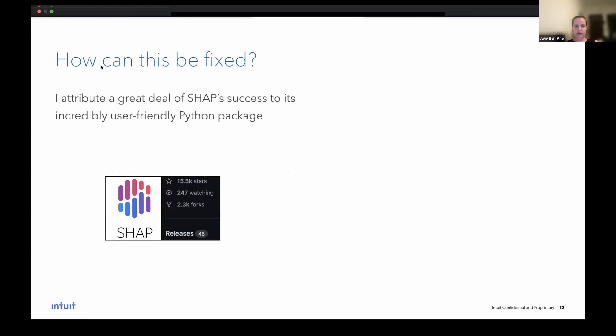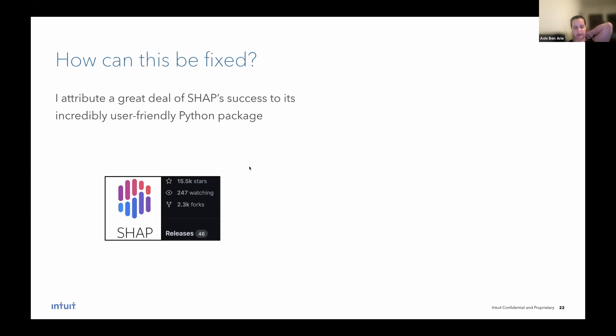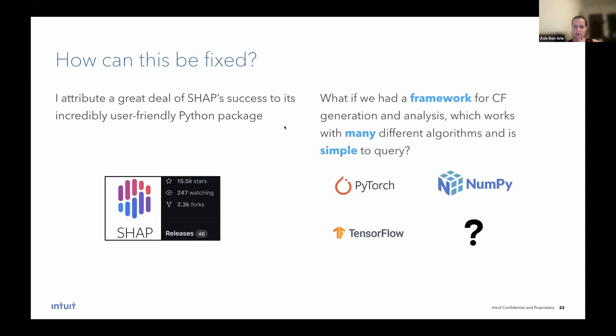So how can this be fixed? Well, I attribute a great deal of Shap's success to its incredibly user friendly Python package. I'm sure a lot of you know the package, it has a lot of stars and forks, and with just a few lines of code, without understanding how Shap actually works, I can get very good explanations and even very good charts. So we thought, what if we had a framework for counterfactual generation and analysis, which works with many different algorithms, and it's very simple to query. Some examples of good frameworks that we use every day include PyTorch, TensorFlow, NumPy, and we thought maybe we can generate something as popular as these packages.